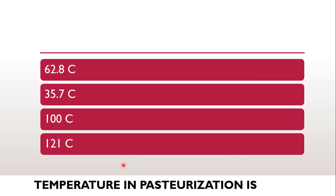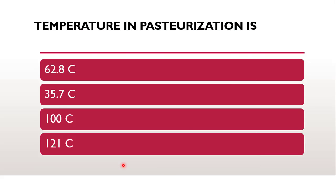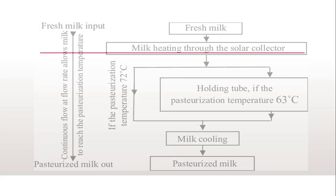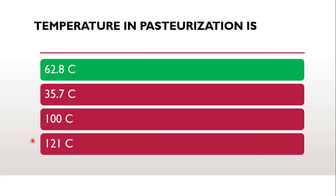The next question is: the temperature in pasteurization is — 62.8°C, 35.7°C, 100°C, or 121°C? Definitely 121°C is not the answer and 100°C is also not the answer because the temperature is below 100°C. The range of 35.7°C is very normal temperature, so the correct answer is 62.8°C.